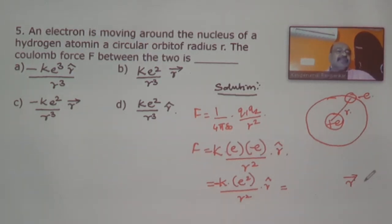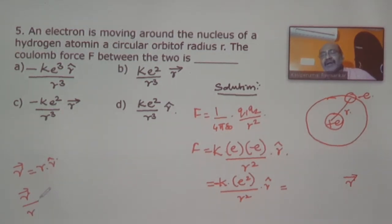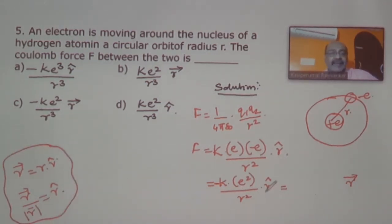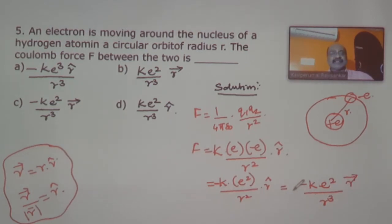To express in vector form with r-hat: we write r-hat as r-vector divided by r. So instead of dividing by r² with r-hat, we divide by r³ with r-vector. The answer becomes minus k times e squared divided by r cubed, times r-vector. Option C is the answer.